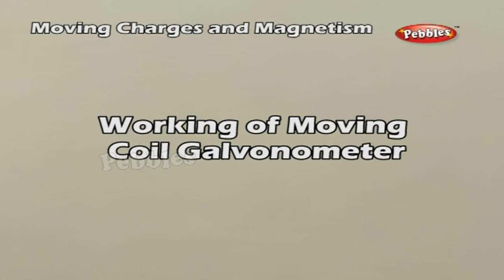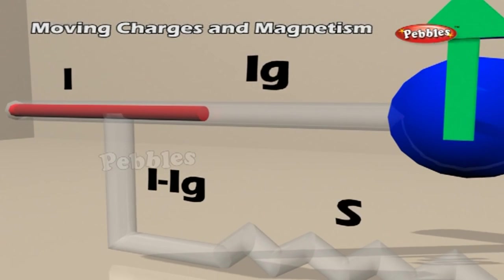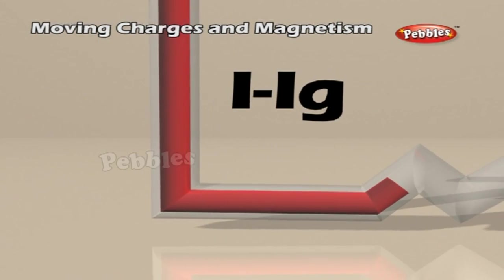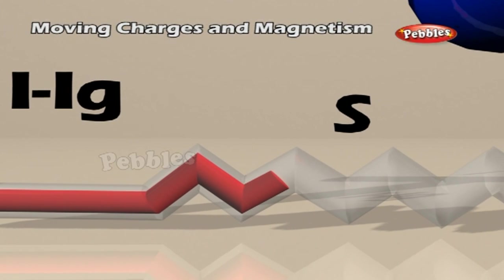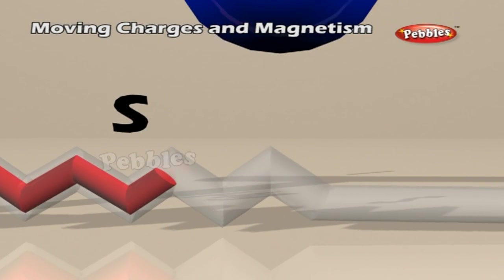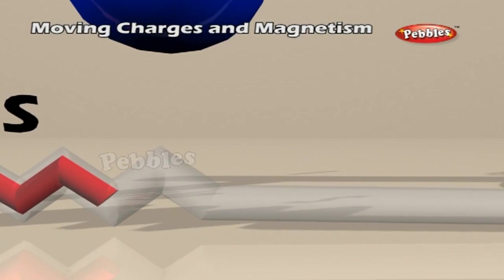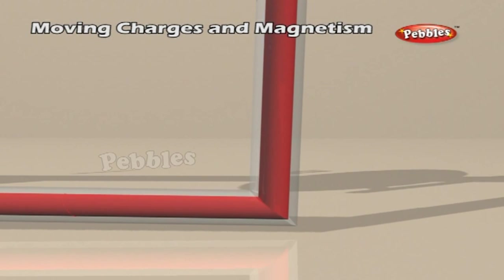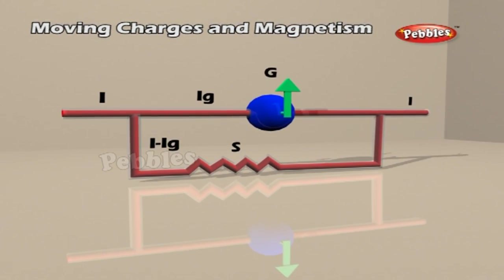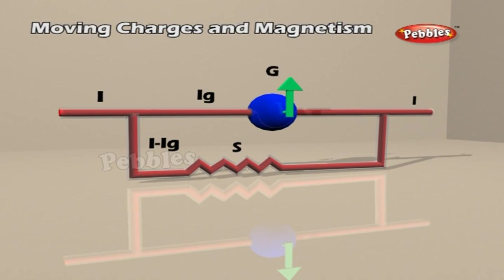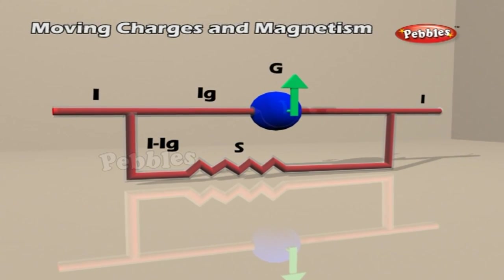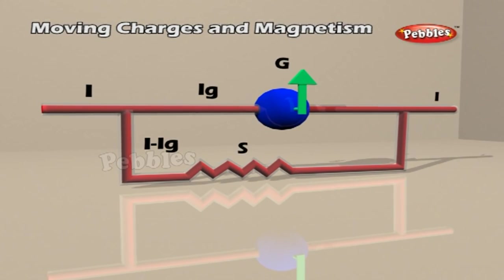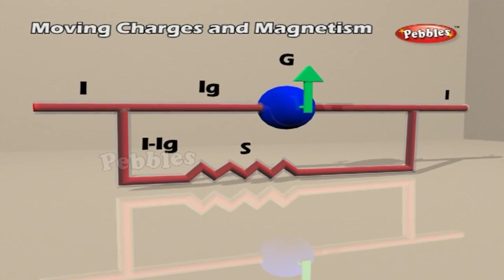Working of the moving coil galvanometer. When current is passed through the coil, it experiences a torque T equals NIAB, which rotates the galvanometer needle. The galvanometer needle becomes stationary when the torque due to the spring equals the torque due to the current. Mathematically, this is given as Cφ equals NIAB, where C equals the torsional constant for the spring and φ equals the galvanometer deflection.